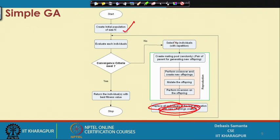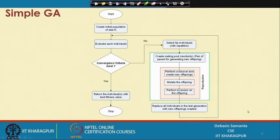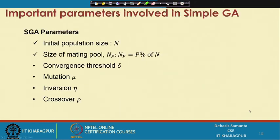In simple GA, N is the population size and NP is the mating pool size. The NP produces new NP offspring, and the new NP replaces the old NP, so the population size remains N and the next generation is formed. This is the basic idea of simple GA.